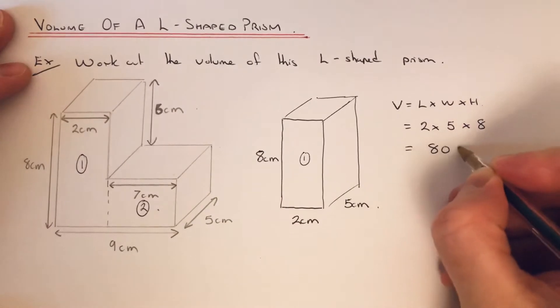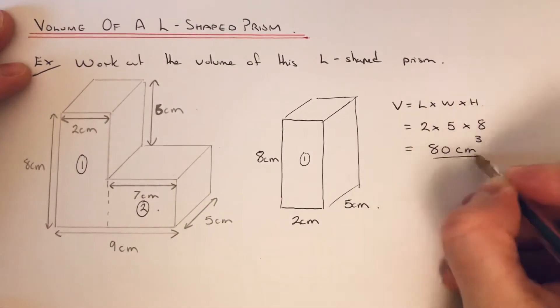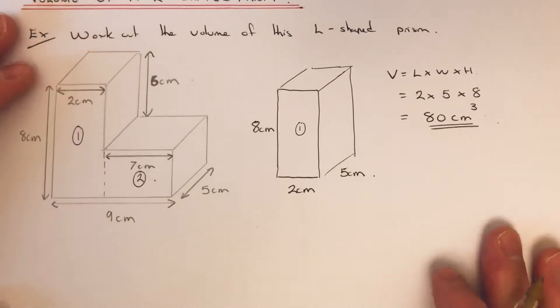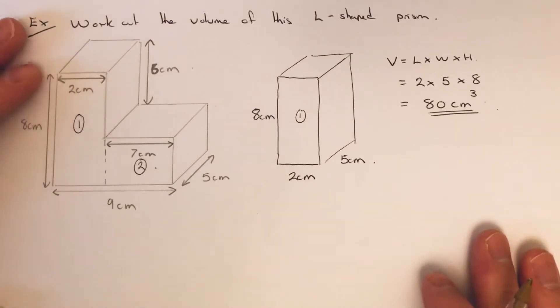And that's centimeter cubed, so that is cuboid 1. Now we can look at cuboid 2.